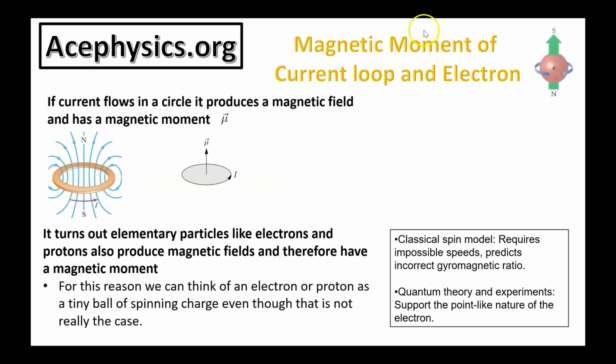Let's start by talking about the magnetic moment of a current loop and an electron. A current flowing in a loop produces a magnetic field and has a magnetic moment. A magnetic moment is a vector quantity that points from the south pole to the north pole of a magnet and is intrinsically linked to the magnetic field generated by the moving electric charges. In the case of a current loop, the magnetic moment is oriented perpendicular to the plane of the loop, with its direction determined by the current flow. The vector not only indicates the orientation but also relates directly to the strength of the magnetic field produced by the current.